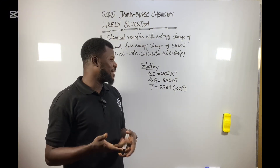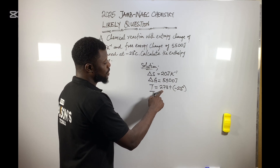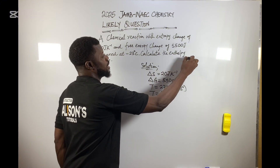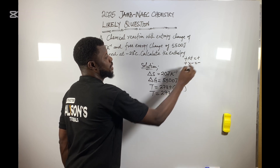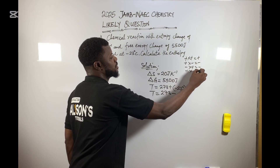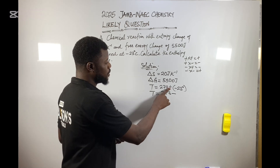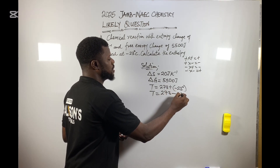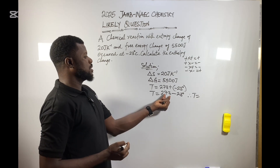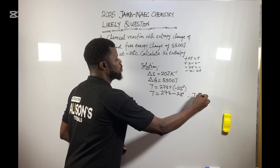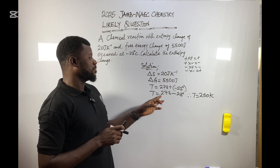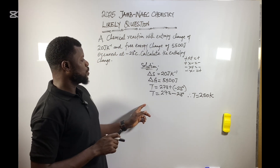Now, working through the signs: plus times minus gives minus, so T equals 273 minus 23. Therefore T will be equal to 250 Kelvin. So we've now converted from degrees Celsius to Kelvin, and we're done with the temperature.